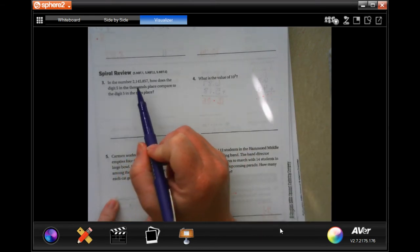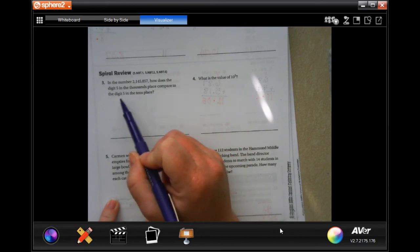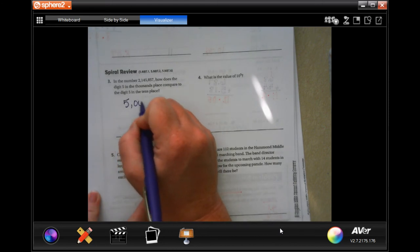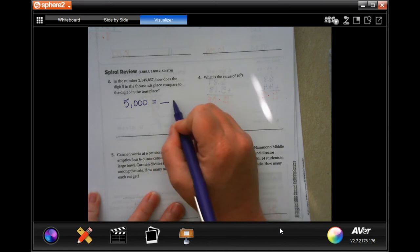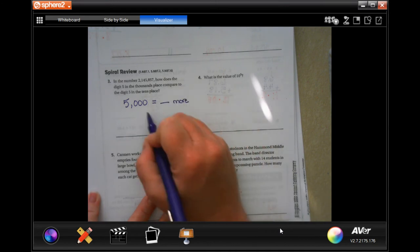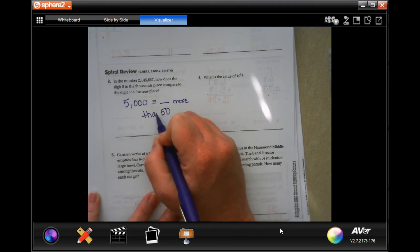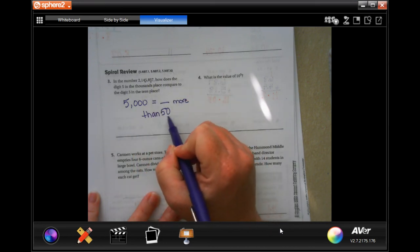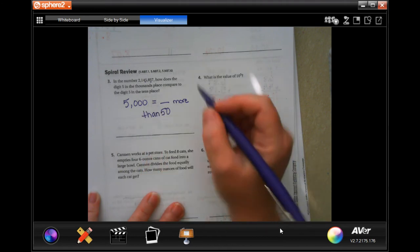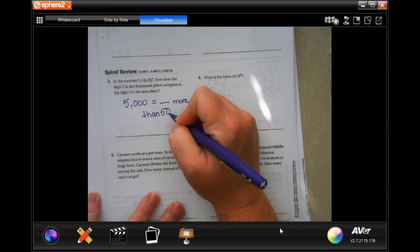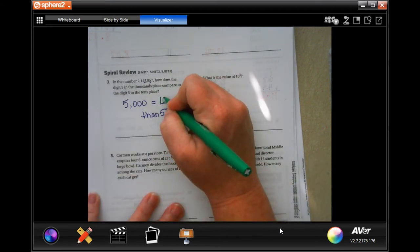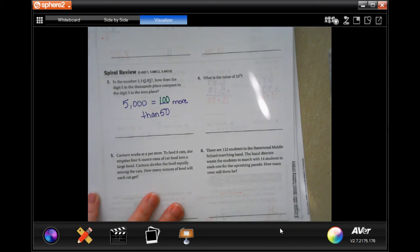It says in the number 2,145,857, how does the digit 5 in the thousands place compare to the digit 5 in the tens place? Well, 5,000 is how many times more than 50? Well, there's 5 and there's 5. So 5,000, this has one zero and this has three zeros. If we're going to multiply 50 and get to 5,000, we have to multiply it by 100. 5,000 is 100 times more than 50.